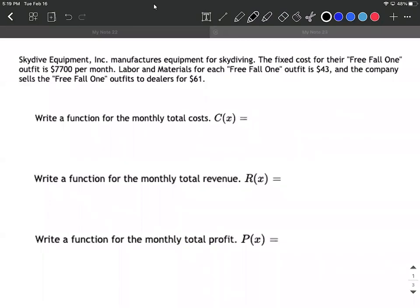So the first thing we're going to come up with is our cost function. When we're determining our cost function, remember that the cost can involve two different factors: we can have either fixed costs and variable costs.